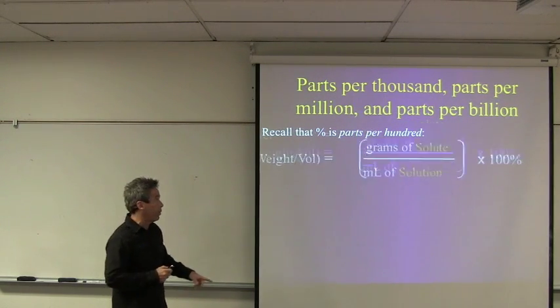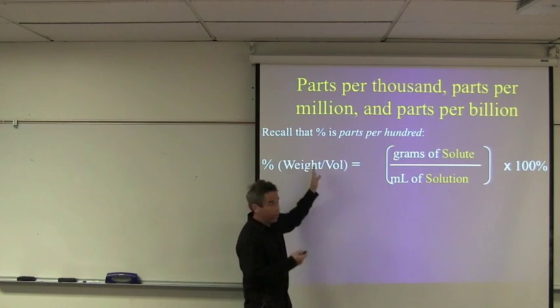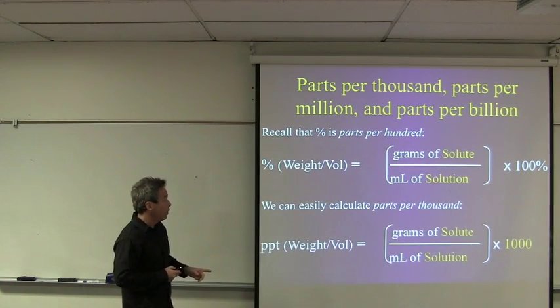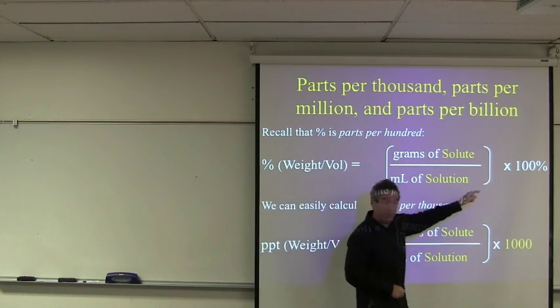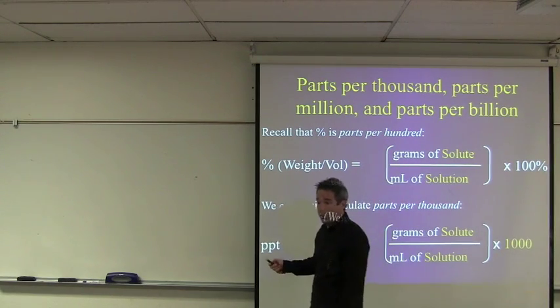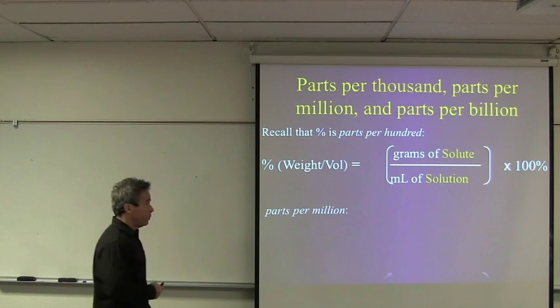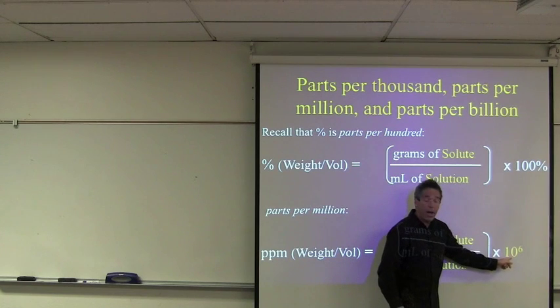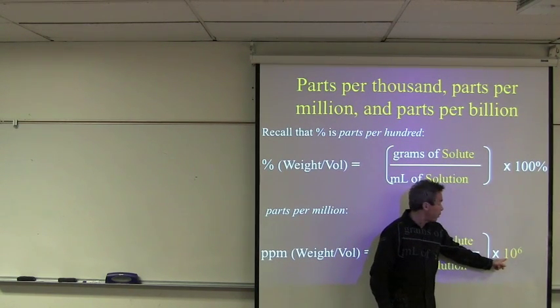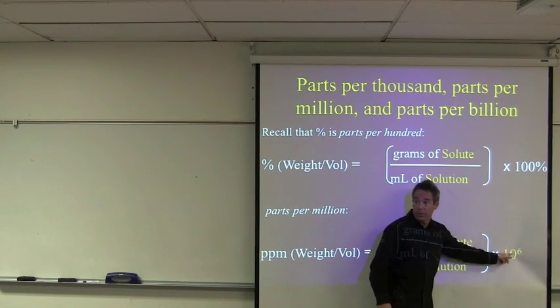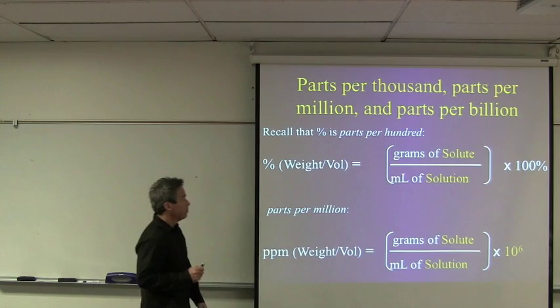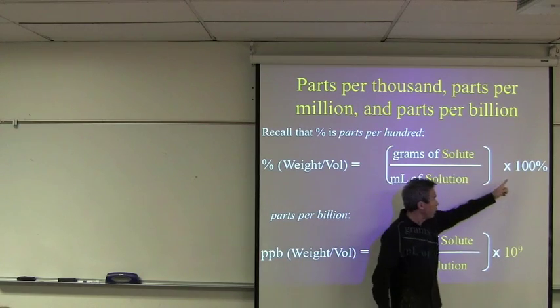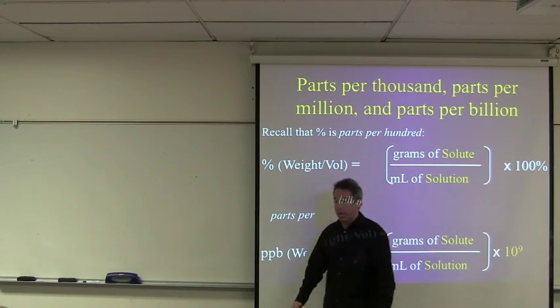Here's how we can calculate those. Recall that percent is the same as parts per hundred. So, this is percent weight to volume, for example. We have this ratio times a hundred. To do parts per thousand, we'd just do the same thing, but instead of multiplying by a hundred, you multiply by a thousand. For parts per million, same ratio, but instead of multiplying by a hundred, you multiply by a million. When you do this on your calculator, your calculator will want you to put one times ten to the sixth. And for parts per billion, you'd do the same thing, multiply by a billion, one times ten to the ninth.